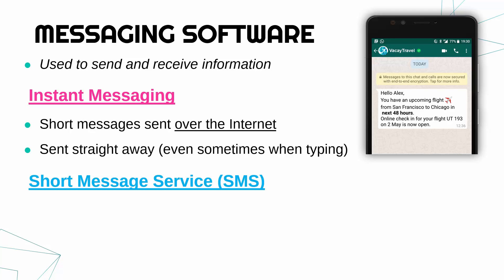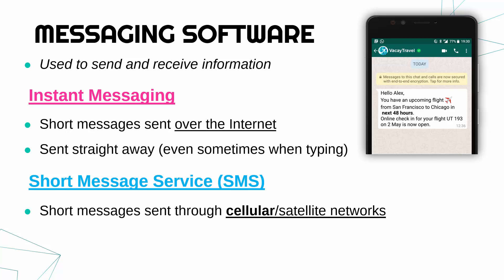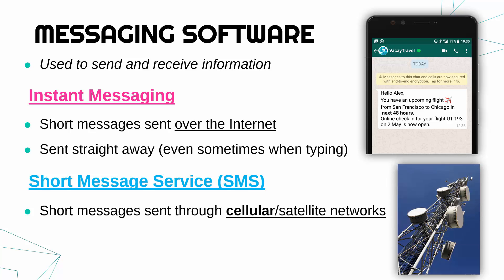SMS is the old-fashioned version of instant messaging software. A text message is where you send short messages through cellular or satellite networks. Cellular is mostly what this will be. A cellular — also called a mobile network — uses massive radio towers and is not the internet; it's a different system, but you're still communicating via radio waves.